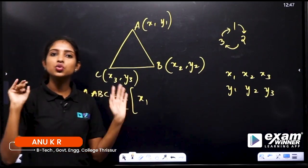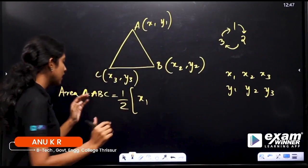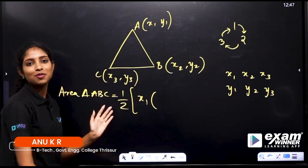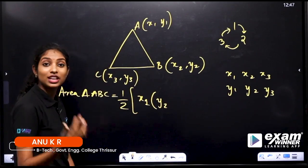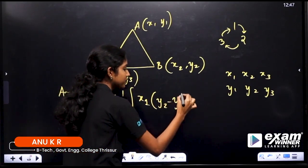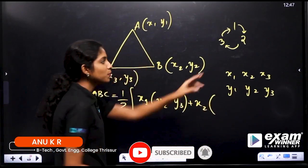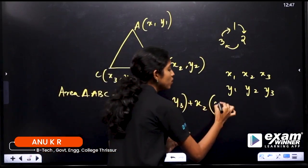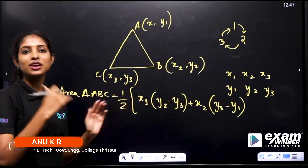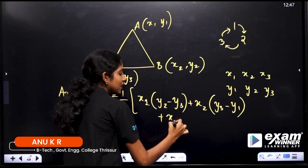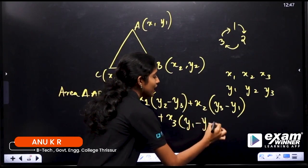We are going to write the equation. We will write the equation: x1 into y2 minus y3. We will write x2 into y3 minus y1. We will write x3 into y1 minus y2.